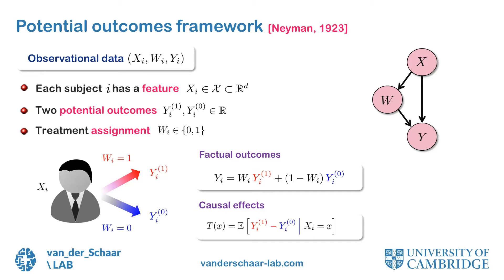In the observational data, we only observe the factual outcomes. That is to say, if the patient was assigned the treatment, we observe their outcome with the treatment; otherwise, we observe their outcome without the treatment. But we never observe both counterfactual outcomes. The problem of causal effect inference focuses on estimating the effect of the treatment on individual subjects — that is, the difference between YI1 and YI0 given a certain realization of the patient features.